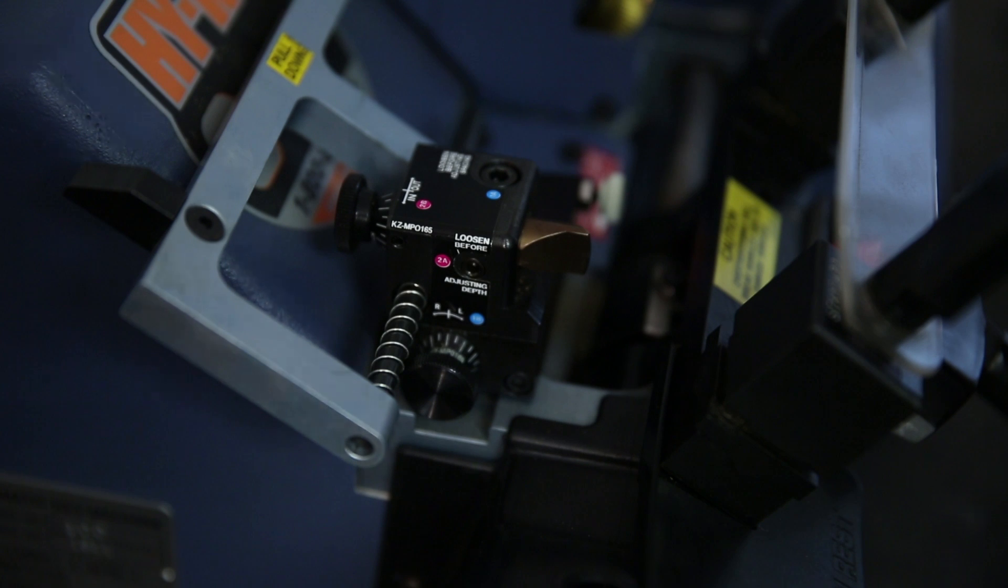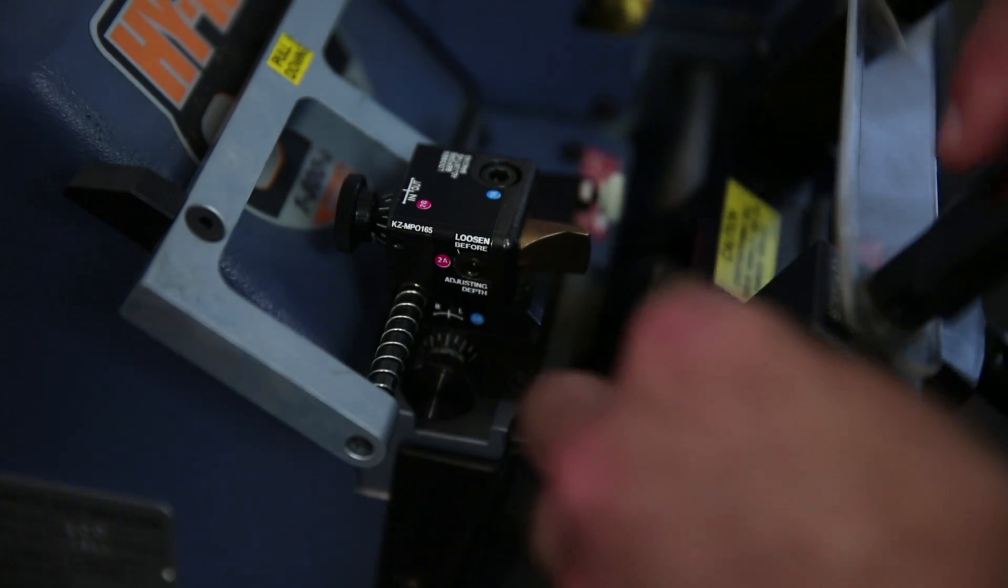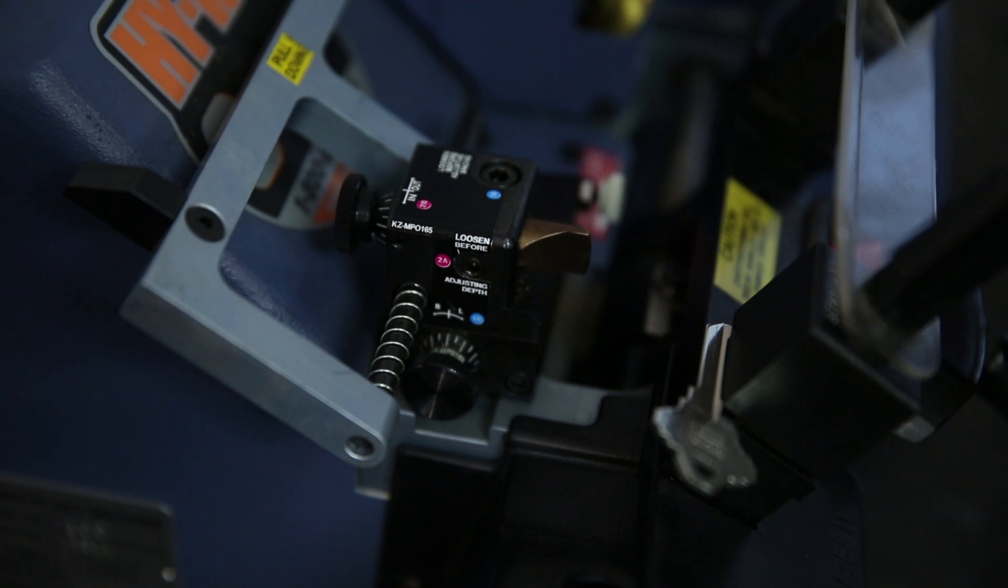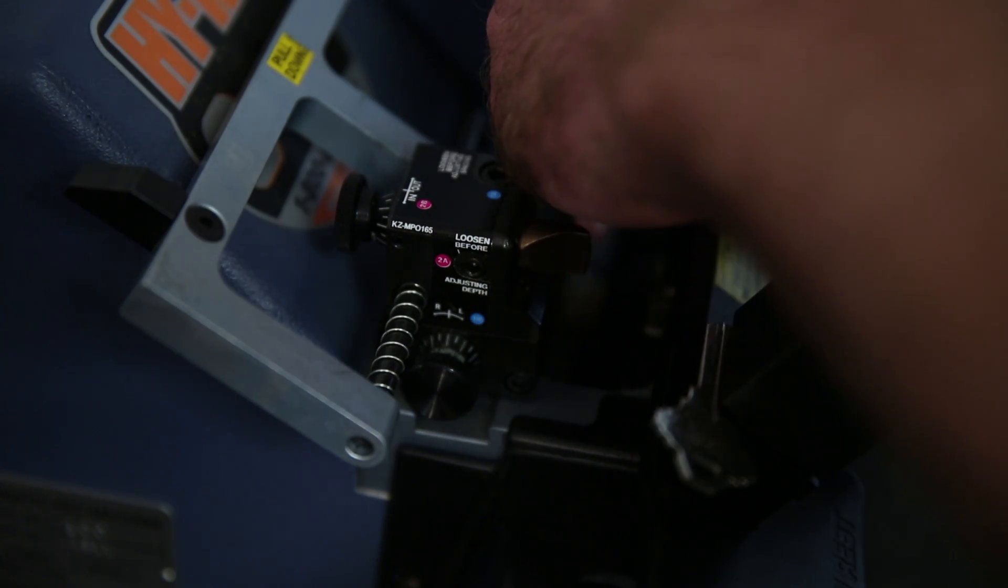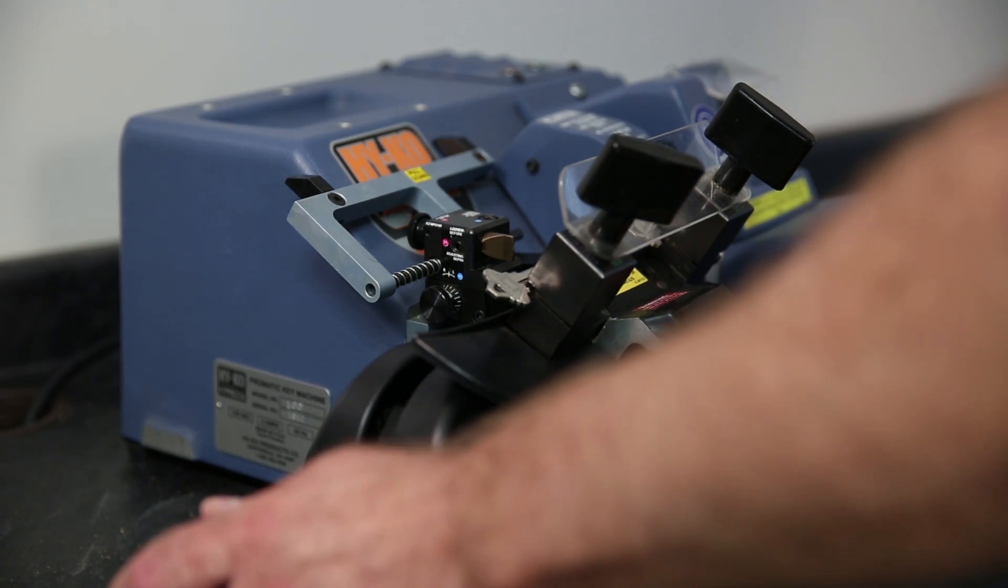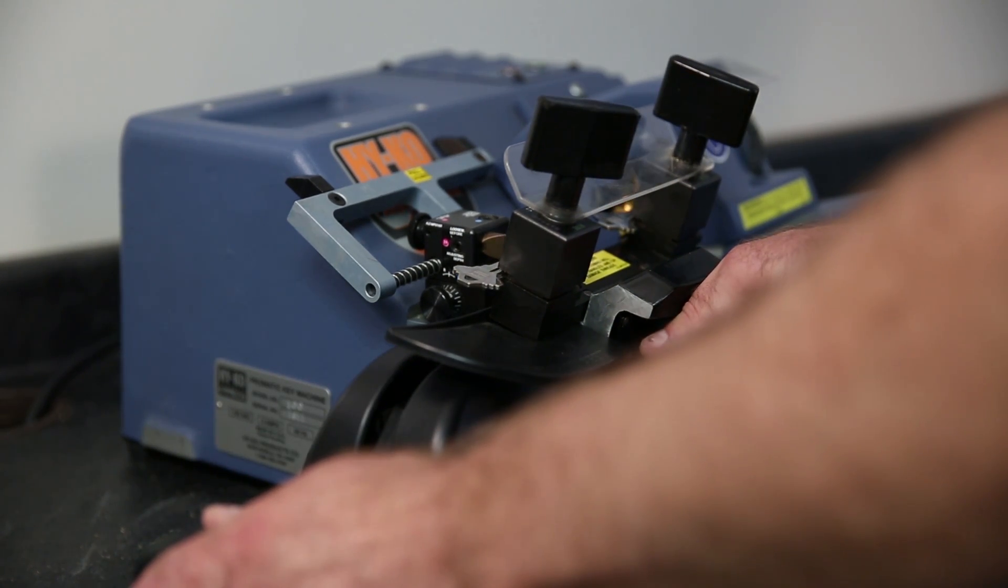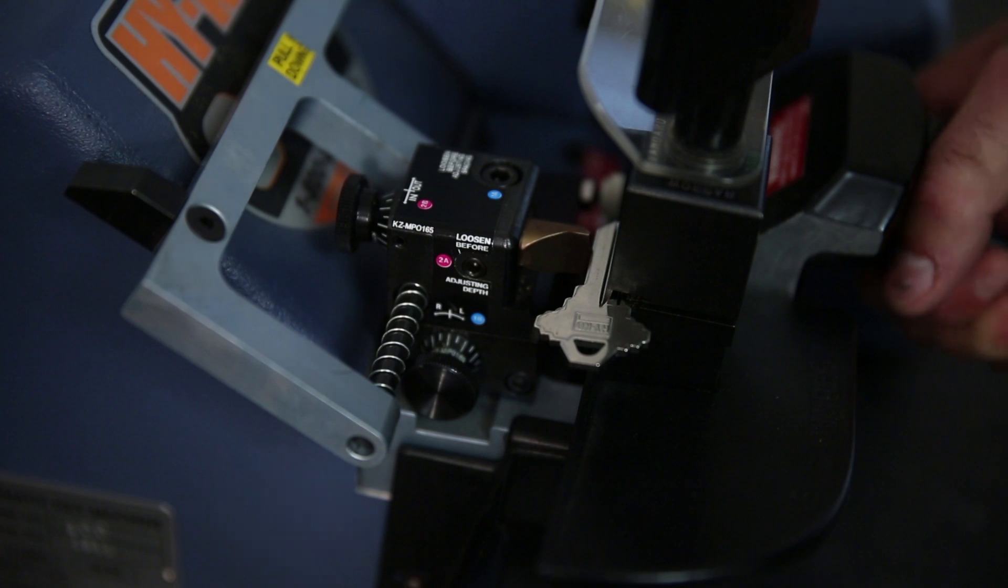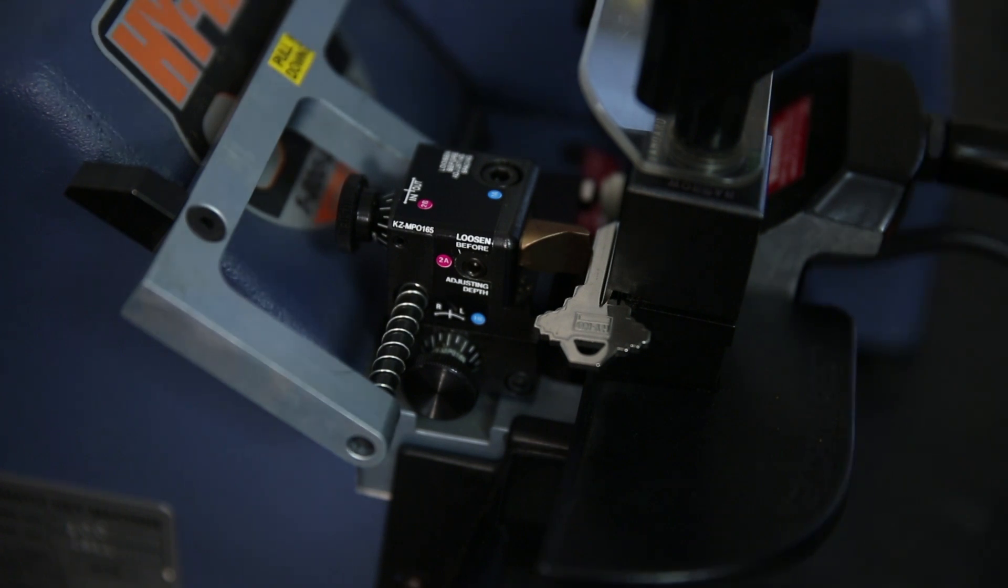First, clamp an SC1 key blank into both the left and right jaws. Now raise the carriage and slide the bearing behind the pressure plate. Bring the keys up to the cutter like they are going to be cut. Line up the tracer and cutter in the middle of the key blanks.